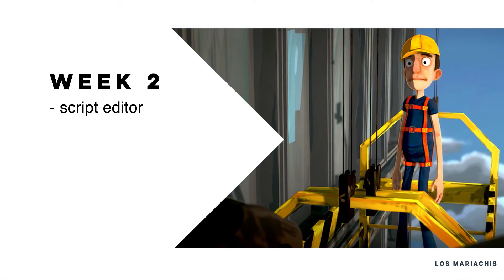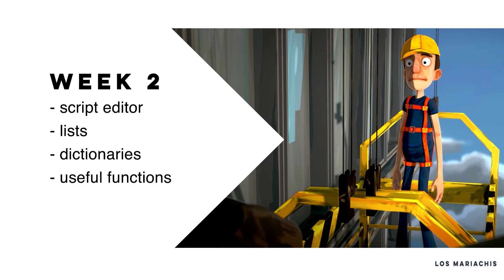In week two we will be looking at our script editor to have a basic understanding of the tools we are using. Then we dive back into coding and explore lists and dictionaries, which are an essential part of Python. We also learn the difference between the two and how to use them appropriately. Afterwards we discover some useful functions and expressions to manipulate the newly learned data types from this and last week. We wrap up this week with pseudocode — what it is, where we use it, and what the benefits are of pseudocode instead of already writing Python code from the beginning.